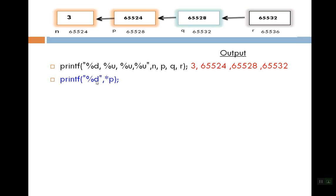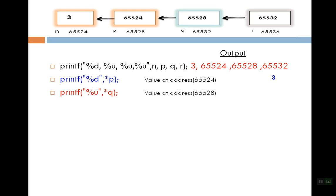The next statement is printf %d, star p. We have seen that p is a single pointer. We put 1 star, so we go straight to the value of n. Star means value-at-address, and the value in p is 65524. So what value is at 65524? The value is 3. So we get output 3. Then printf %u, star q — because q is a double pointer, we write value-at-address, and q's value is 65528. What is at 65528? The value 65524. So the output here is 65524.